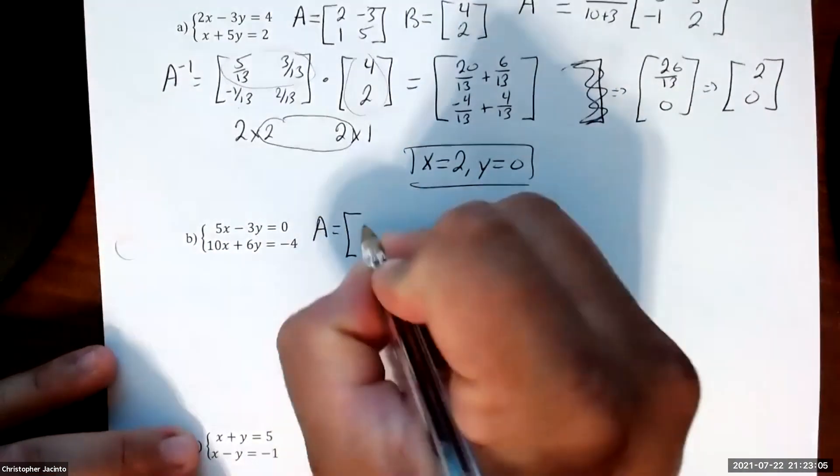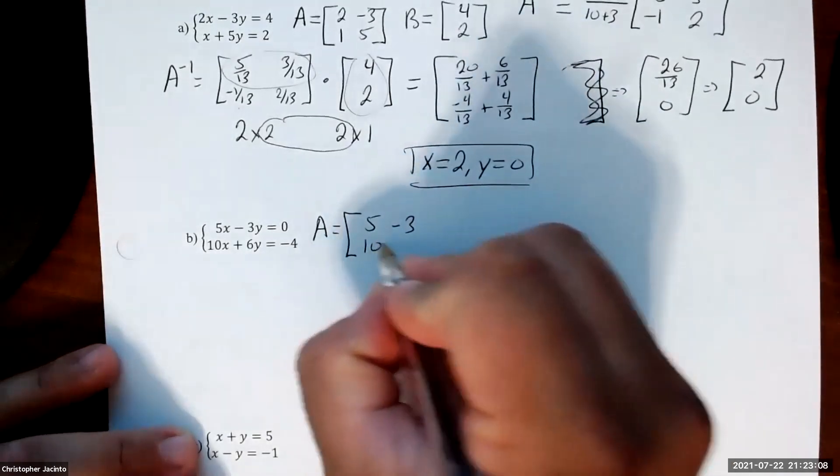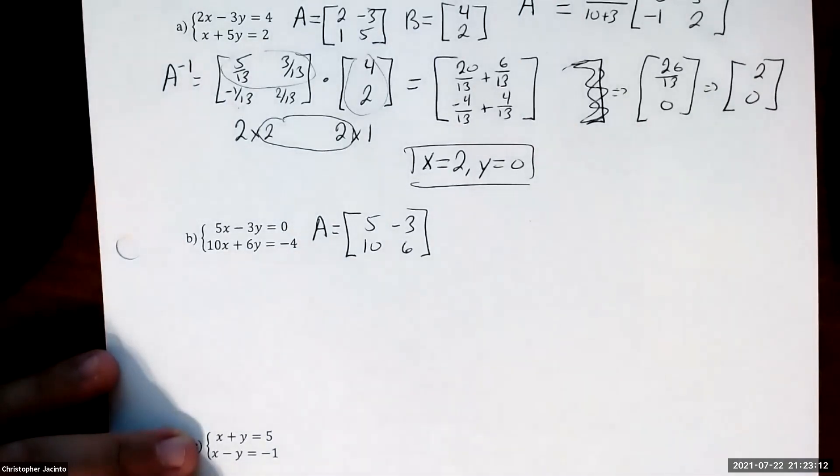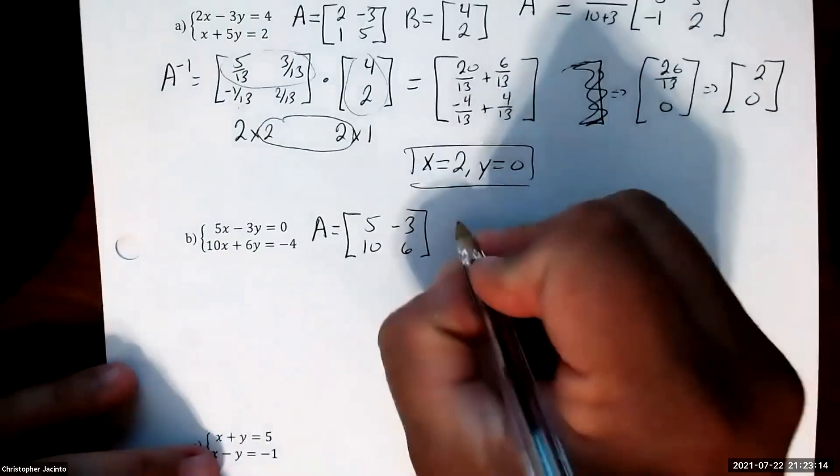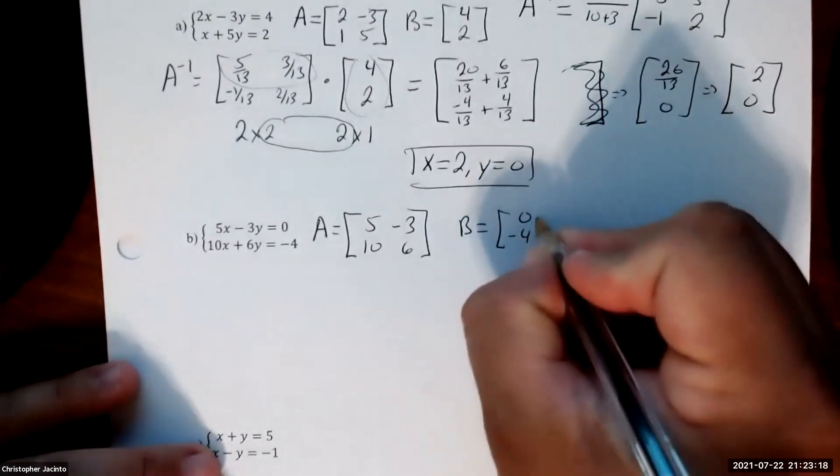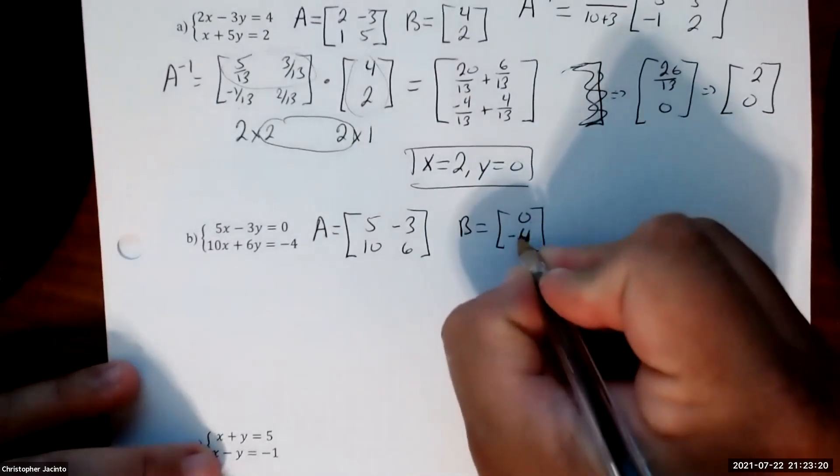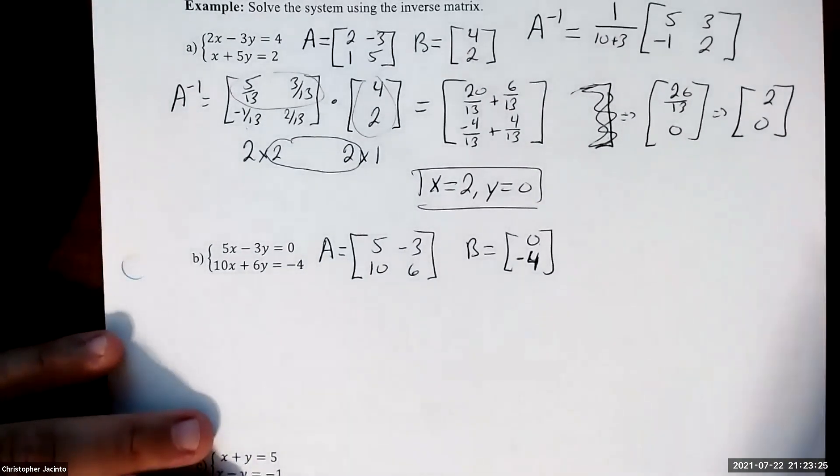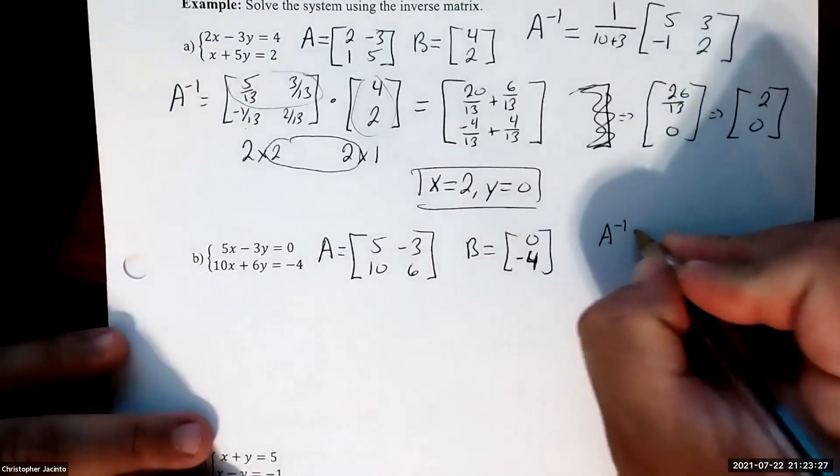So first we get A. Matrix A is 5, negative 3, 10, and 6. Matrix B is 0 and negative 4. So just like the last one, we're going to find the inverse of A.